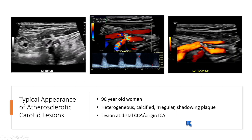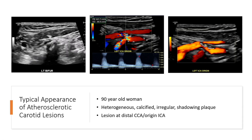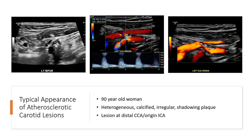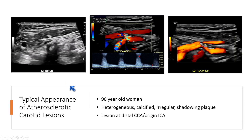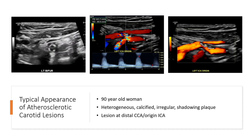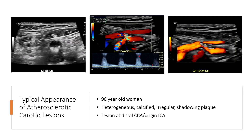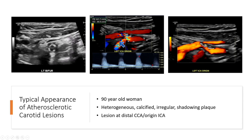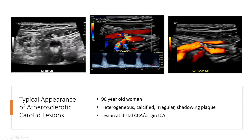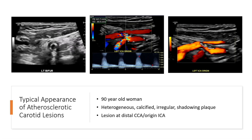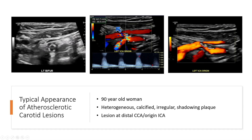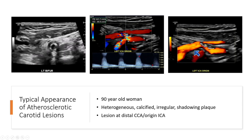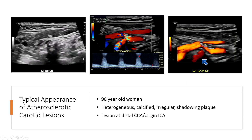This is the typical appearance of atherosclerotic plaque and atherosclerotic carotid disease. These are images taken from a 90-year-old woman. We can see on this grayscale image that there is heterogeneous, calcified, irregular, shadowing plaque. Lesions tend to be at the distal CCA and the origin of the ICA — bifurcation lesions, as noted. We see marked velocity elevation at the area of plaque and evidence of narrowing at the distal CCA and proximal ICA.